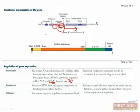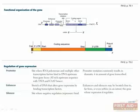Not shown here is another type of regulatory sequence called a silencer, which can be bound by proteins such as negative regulators to repress transcription. The coding region is made up of exons and introns. The exons are the parts that will actually make it into the final mRNA, whereas the introns will all be removed in a process called splicing.